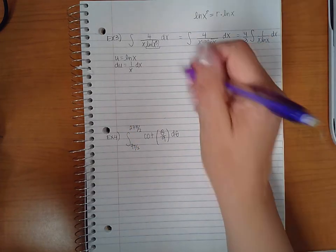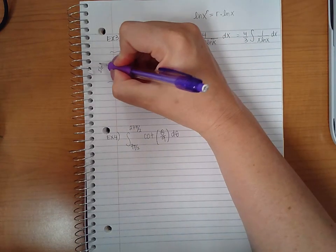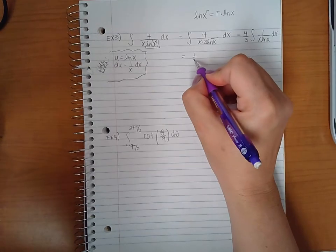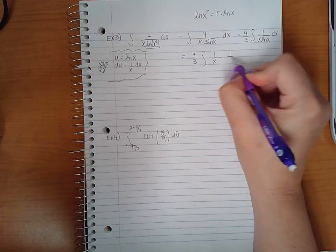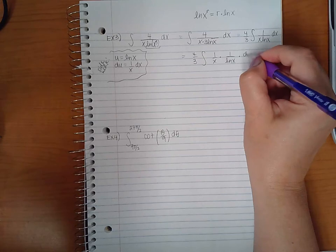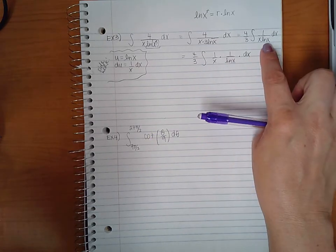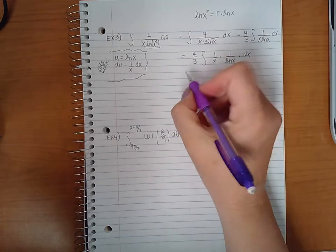Then du is actually 1 over x with a dx tagged along. I do have all of those parts here. Remember, this is just side work. If I wanted to rewrite this integral, I could write 1 over x times 1 over ln of x times dx.